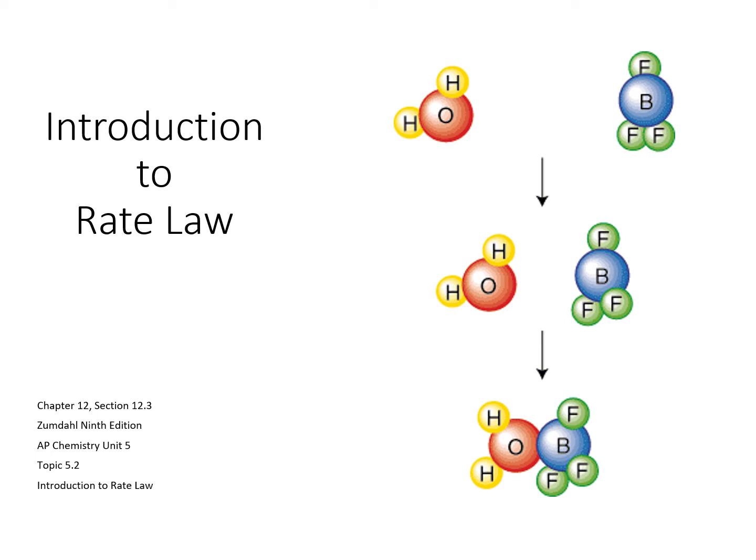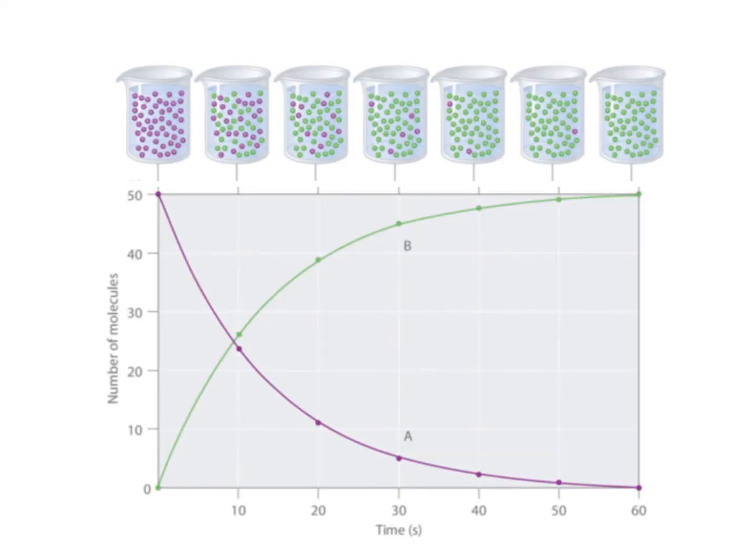Introduction to rate laws. If you analyze this graph and diagram, you see that in the first picture you have all reactants. On the graph we have number of molecules on the vertical axis. We have 50 molecules of reactant.